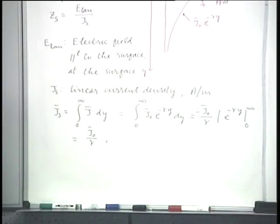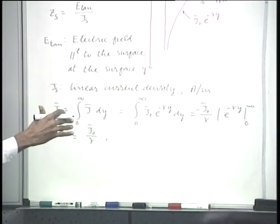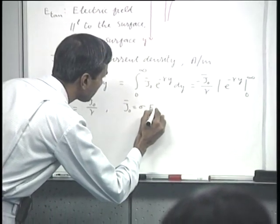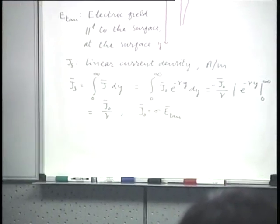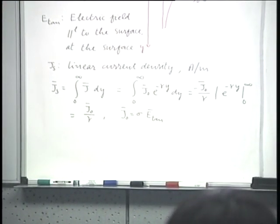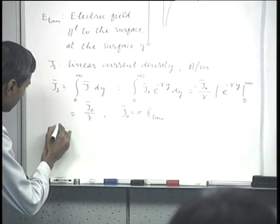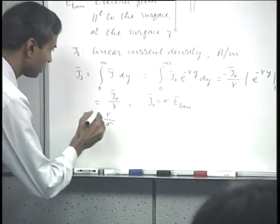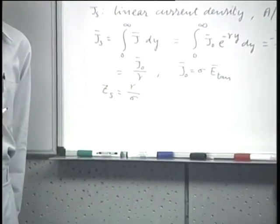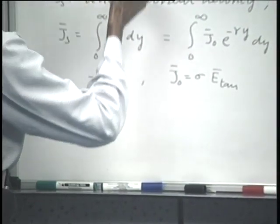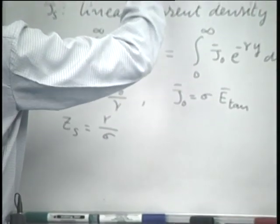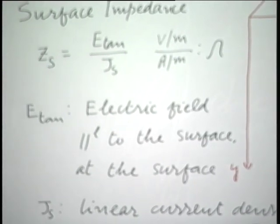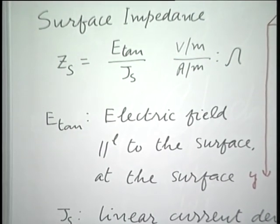Since J naught equals sigma times E_tan, and they are collinear, we see that Z_s equals gamma divided by sigma, where gamma is the propagation constant and sigma is the conductivity of the medium. Checking units — volts per meter divided by amperes per meter gives volts per ampere — the name surface impedance is quite appropriate.